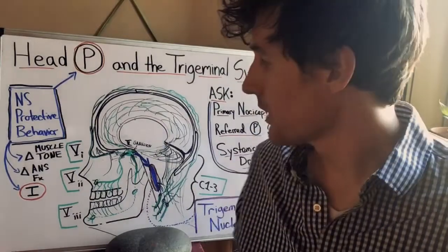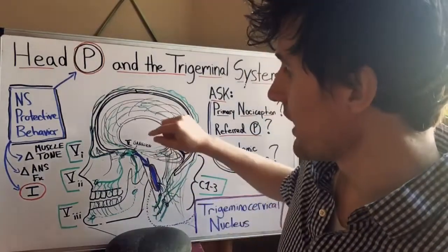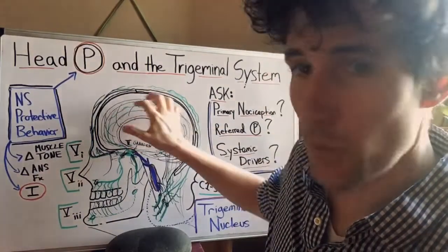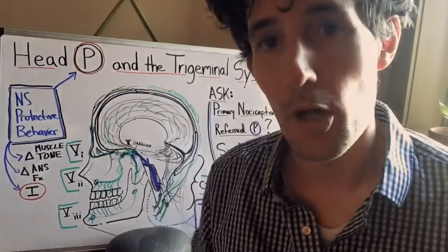So there are also some secret branches of the trigeminal nerve which innervate the meninges covering the brain as well as the arteries perforating in to the main compartment of the skull.